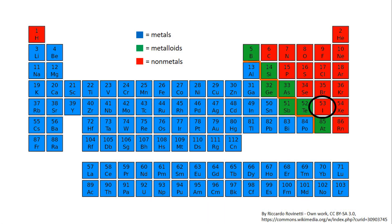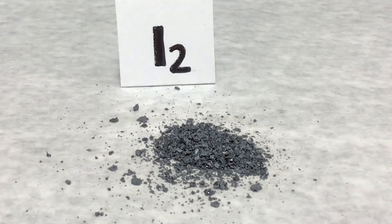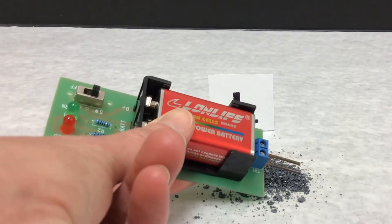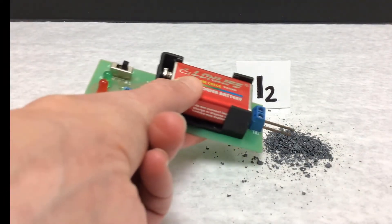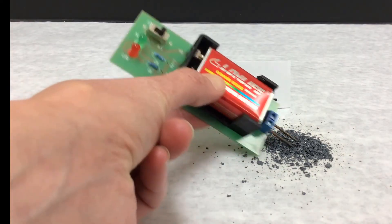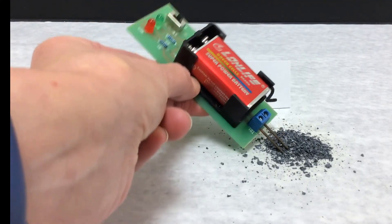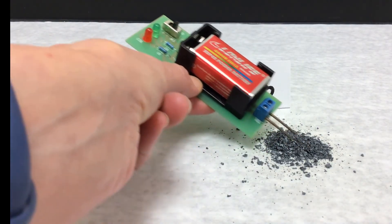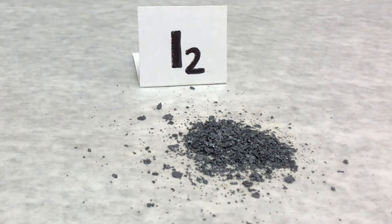The last element that we will be looking at in this video is iodine. Iodine is a non-metal.